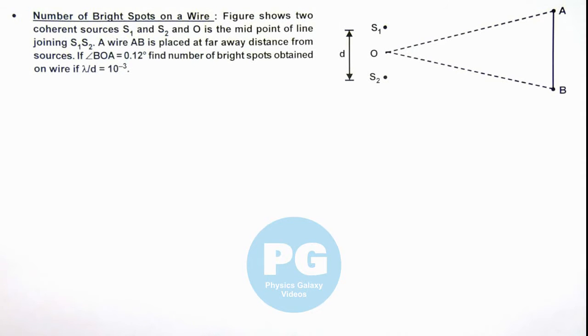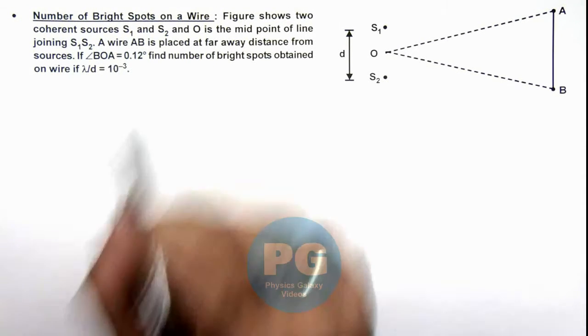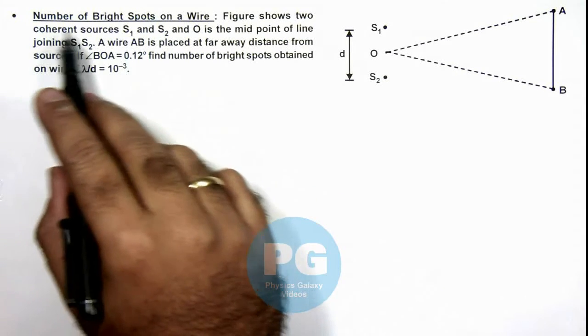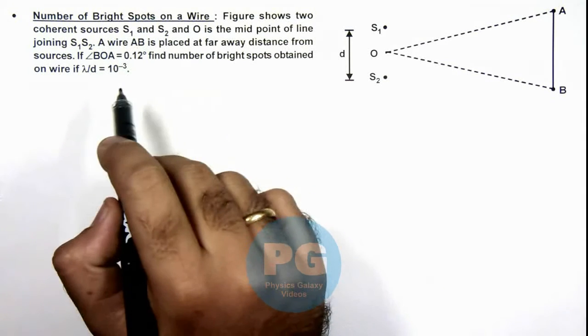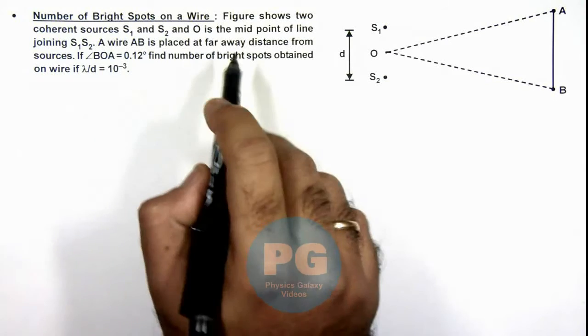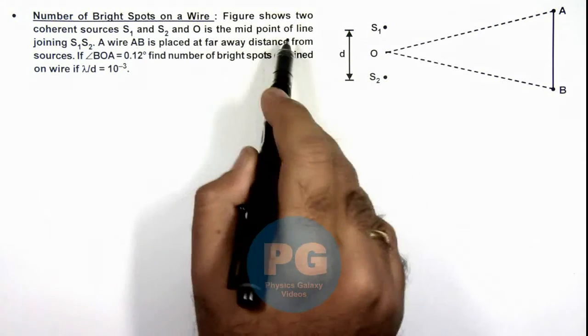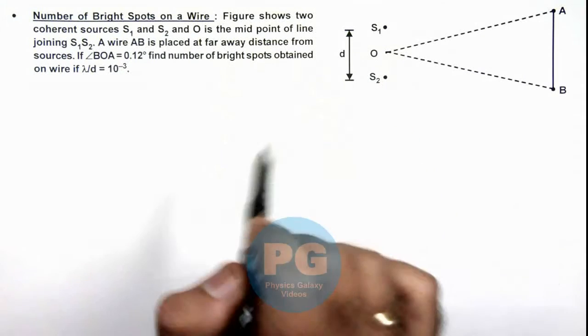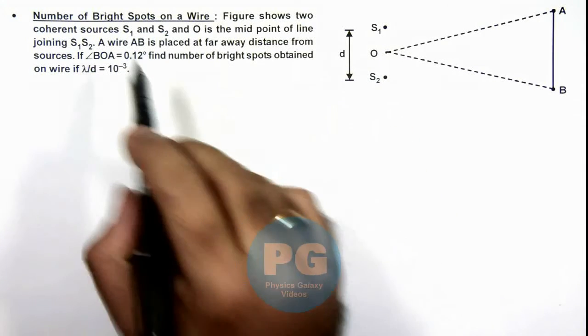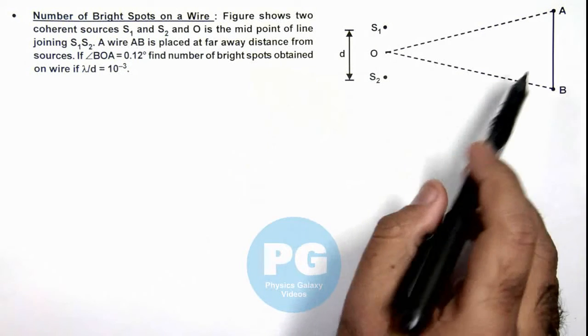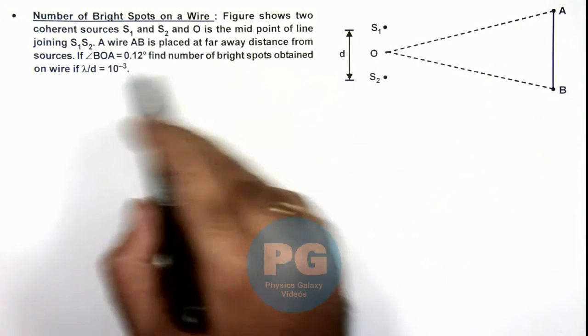In this illustration we'll discuss a case where we'll be studying number of bright spots on a wire. Here we are given that the figure shows two coherent sources S₁ and S₂, and O is the midpoint of the line joining S₁S₂. A wire AB is placed at far away distance from the sources.